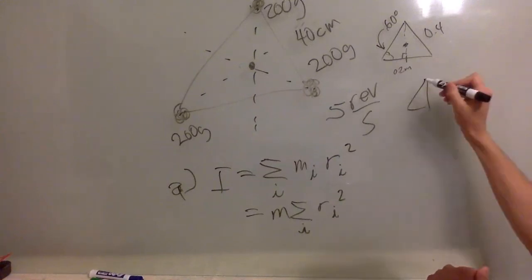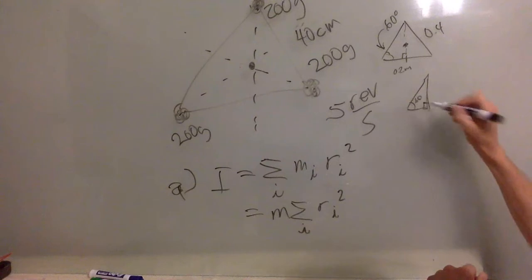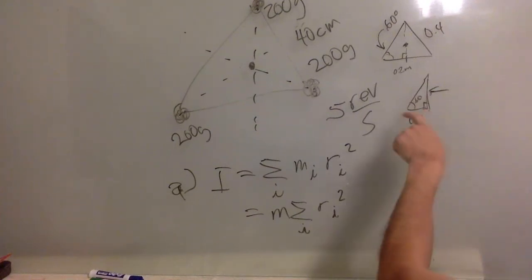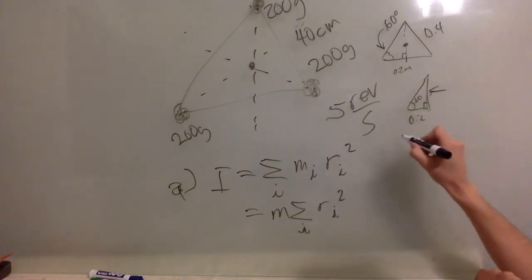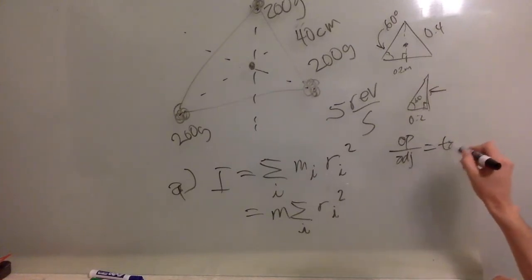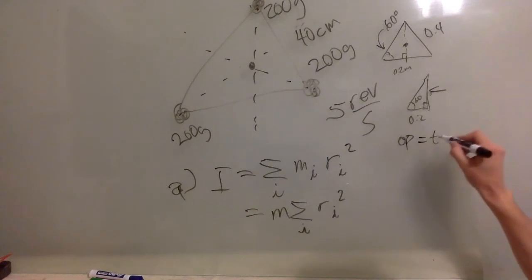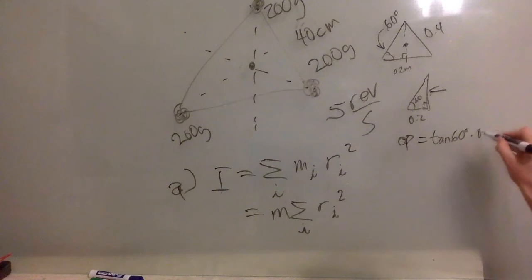And then you have a right triangle over here. You know that this angle is 60 degrees because it is an equilateral triangle. So you want to know this side. For this one you use the tangent - opposite over adjacent is equal to tangent of 60 degrees. So it is going to be tangent of 60 degrees times 0.2 meters.